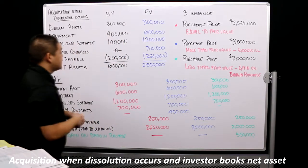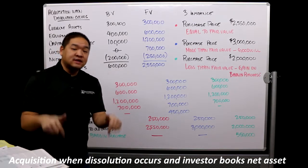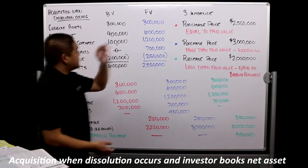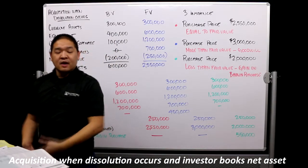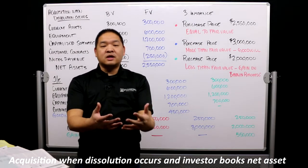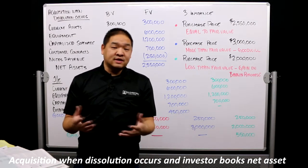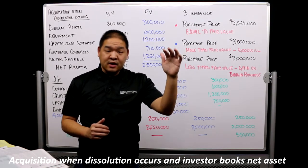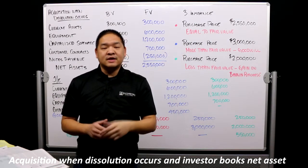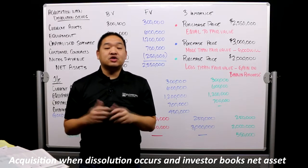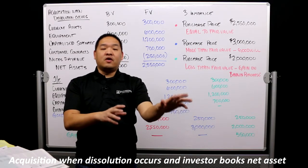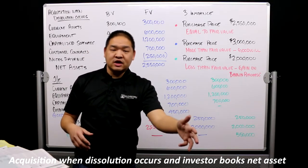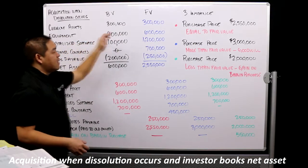If we take the fair value - what they're actually worth today in the open market - current assets would still be $300,000, but equipment would be $600,000. The equipment is on the books at $400,000 but if we sold it today we'd get $600,000. The difference could be because the assets appreciated in value, or because the investee took too much depreciation over time, leaving a lower book value even though it's worth more.